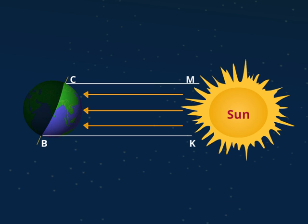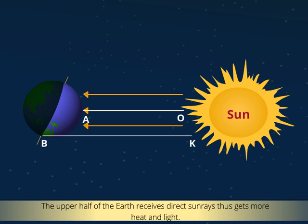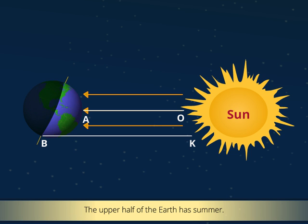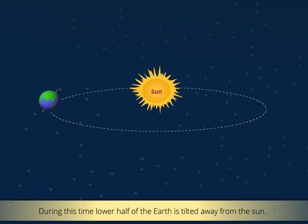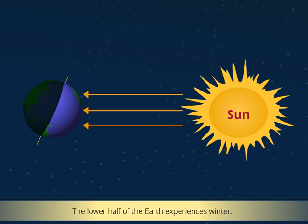Let us compare the distance between points CM and BK. CM are the points from the North Pole to the Sun, and BK are the points from the South Pole to the Sun. These points help us understand that the upper half of the Earth is closer to the Sun. During March to June, the upper half of the Earth is tilted towards the Sun, so it receives direct sun rays and gets more heat and light — meaning the upper half experiences summer. Meanwhile, the lower half is tilted away from the Sun, receives slanted sun rays, gets less light and heat, and experiences winter.